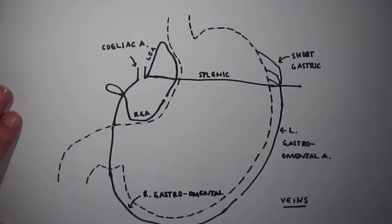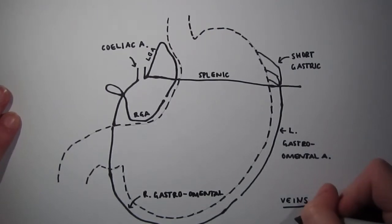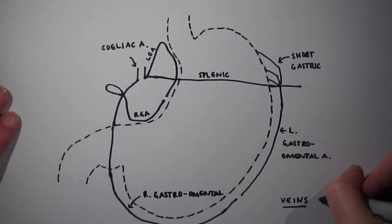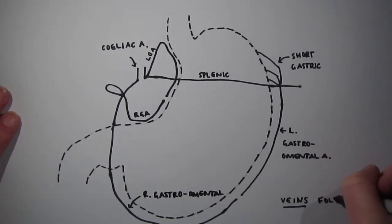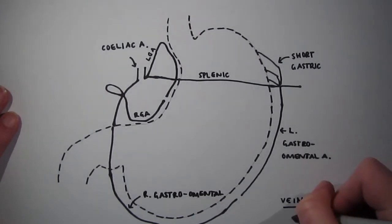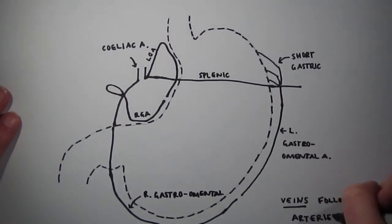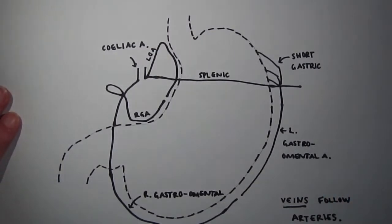The veins of the stomach follow the arteries, with the right gastric and left gastric veins draining to the hepatic portal vein, the short gastric and left gastro-omental veins to the splenic vein, and the right gastro-omental vein to the superior mesenteric vein, with the splenic and superior mesenteric veins joining to form the hepatic portal vein.